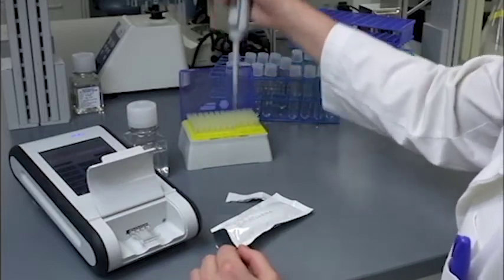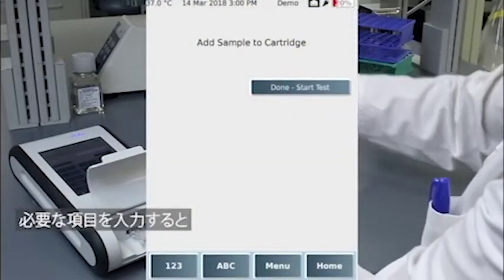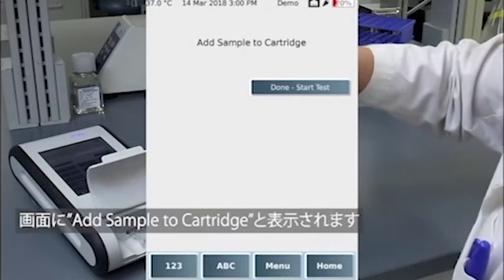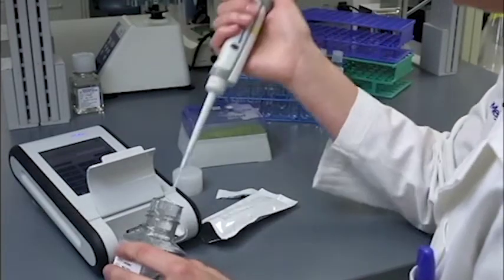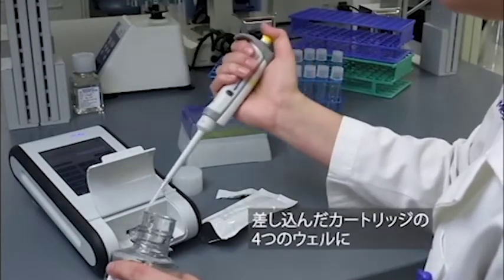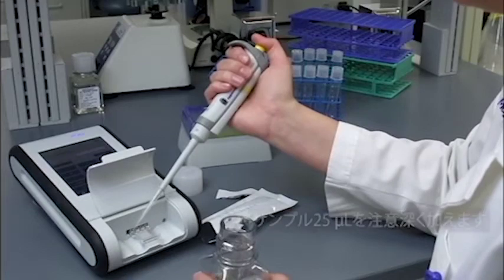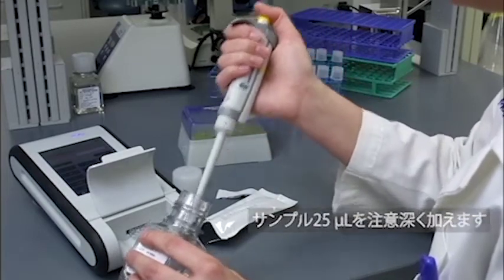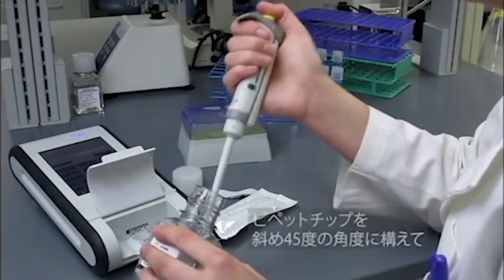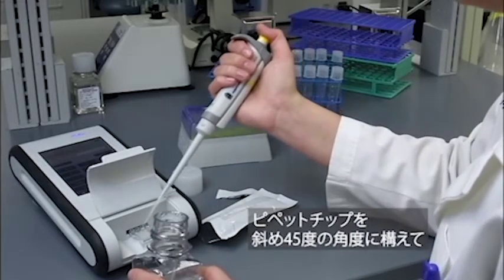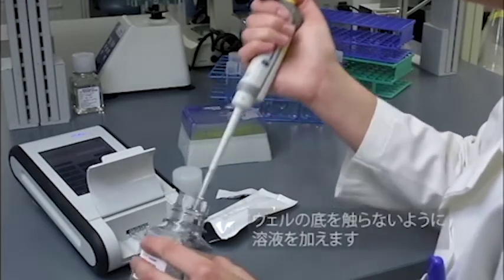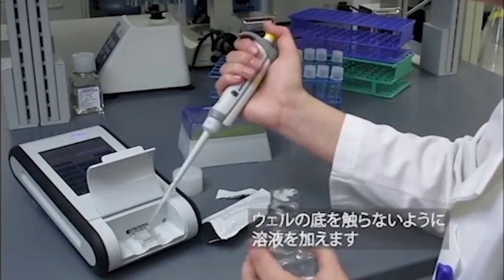Once the necessary values are entered, the reader will display a prompt to Add Sample to Cartridge. Carefully pipette 25 microliters of sample into each of the four sample reservoirs of the inserted cartridge. To do so, hold the pipette so that the tip is at an angle and not completely at the bottom of the sample reservoir.